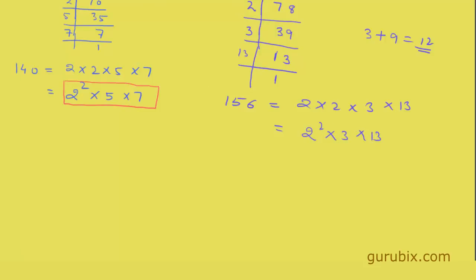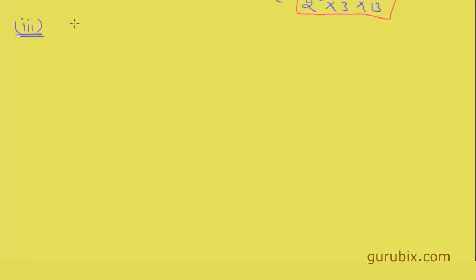We can also write it as 2² × 3 × 13. This is the solution of the second question. Now we shall try the third one — 3,825. This is a slightly bigger number. We see that the unit digit is 5, so it will be divided by 5.